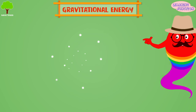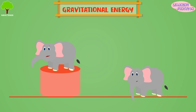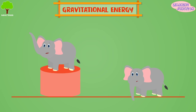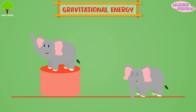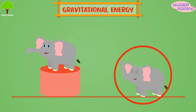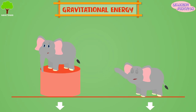It is the energy held by an object because of its high position compared to a lower position. For example, see these elephants? This one has more gravitational potential energy as it is on higher ground, and this one has less, whereas the gravitational force acting on both is the same.